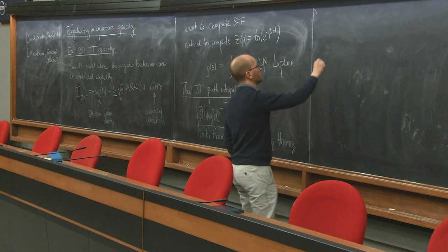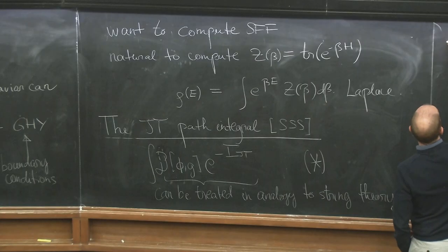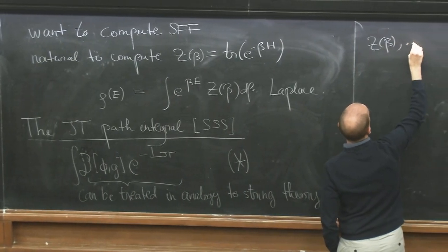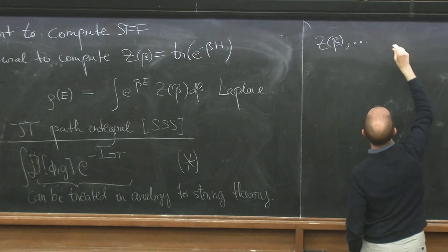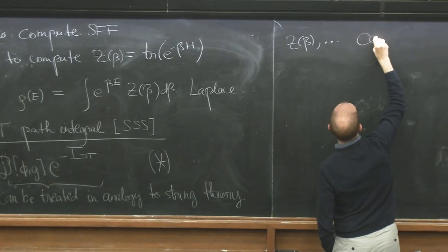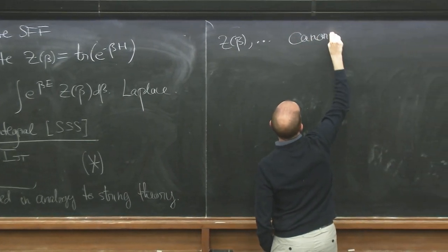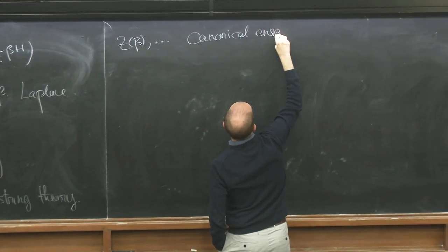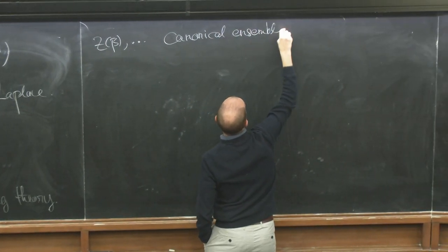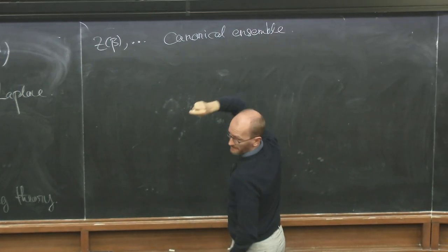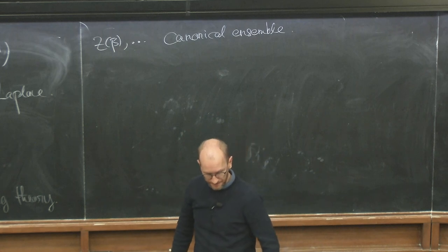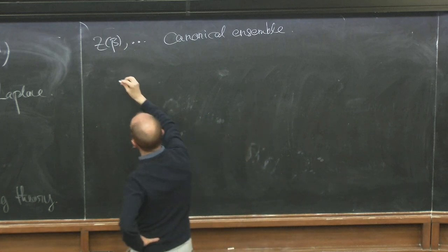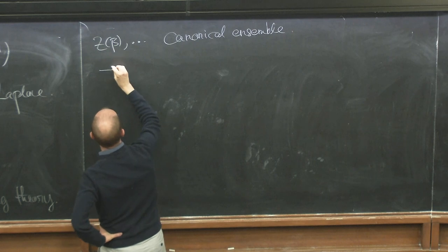We compute Z of beta and other quantities with the same boundary conditions, which basically means that for now we study the canonical ensemble of this theory. That corresponds to these Dirichlet boundary conditions.